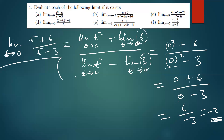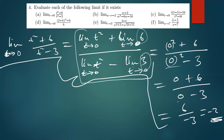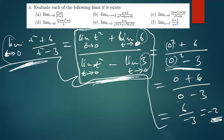Another way to solve this is to simply replace the zeros where there is t directly. Some markers want you to show the distribution step so they know you understand the process. This distributing of the limit to every term is one of the most important steps. For complex expressions like part C, I'll just be replacing the given numbers directly due to space constraints.